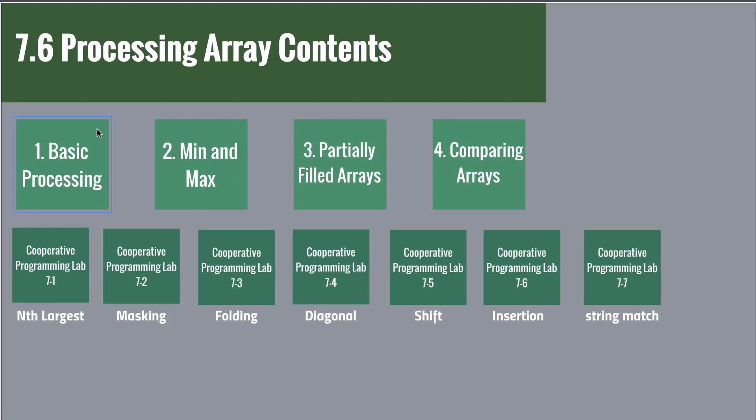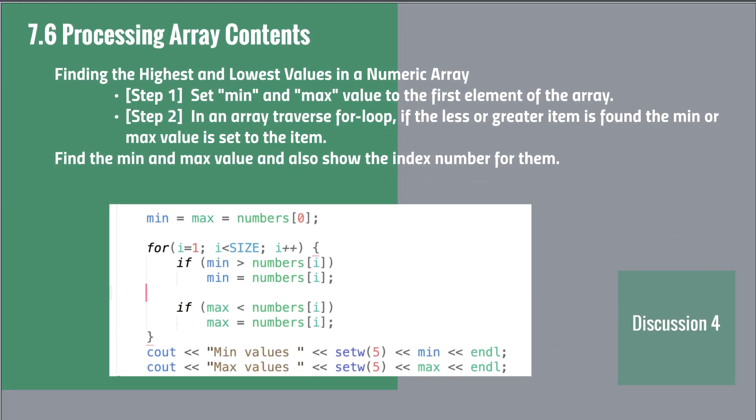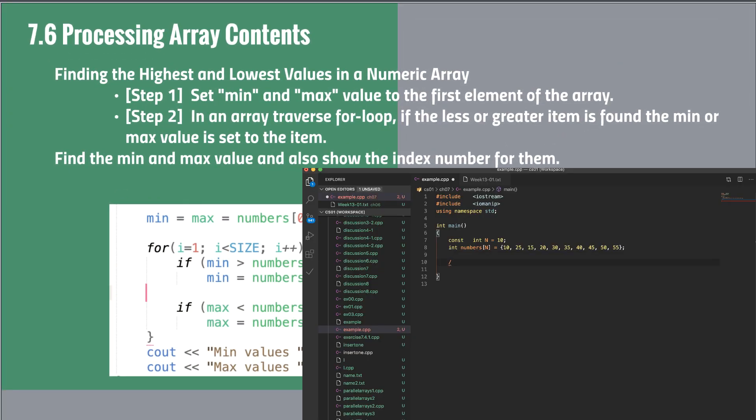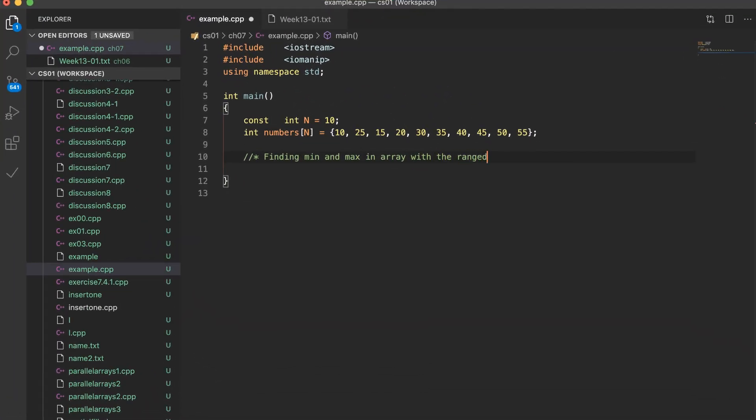The next is finding minimum and maximum value in array. Let's make the program in VS code. Before the starting loop, the min and max variable should be initialized first elements in array.